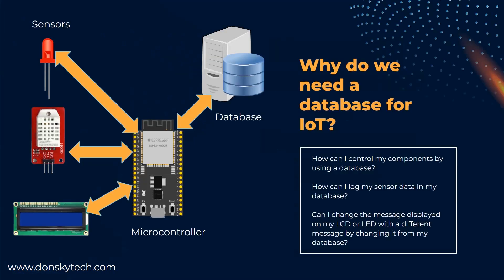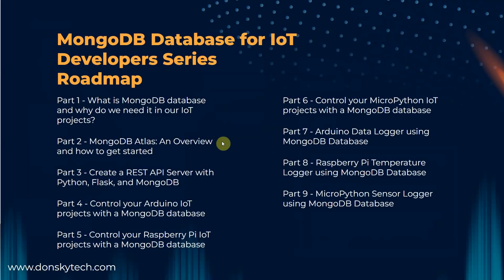Why do we need a database in the first place in your IoT projects? I created this video to try to answer the common questions that I often see on the Internet — such as: I have a sensor that I want to turn on or off by changing the records in my database. Is it possible to log my temperature sensor data and place it in a database so I can retrieve it later? Can I change the message displayed on my LCD or LED by changing it from my database, so there is no need to hardcode the message in my Arduino code? The most likely solution recommended by many blog posts is using MySQL, PostgreSQL, or any other RDBMS or Relational Database Management System.